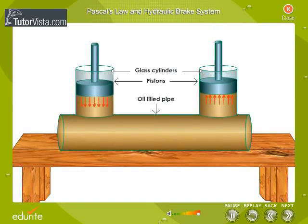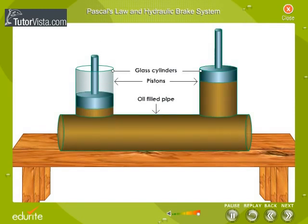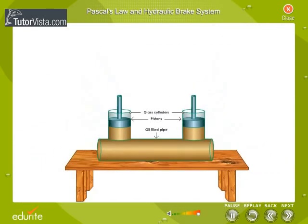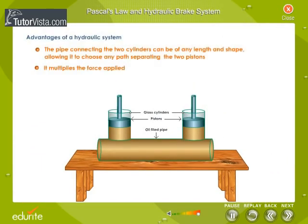Most of the applied force appears at the second piston. The advantage of hydraulic systems is that the pipe connecting the two cylinders can be of any length and shape, allowing it to choose any path separating the two pistons. Another advantage of a hydraulic system is that it multiplies the force applied.